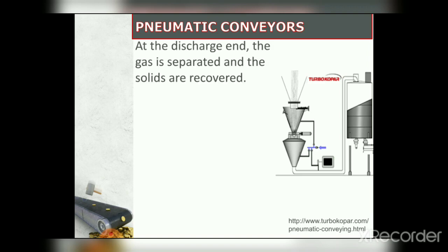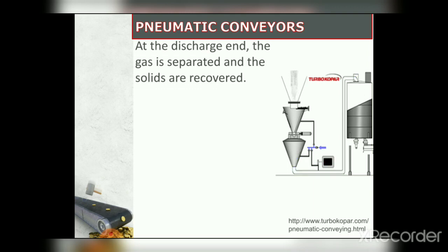At the discharge end, the gas is separated and the solids are recovered. The pneumatic conveyor includes fans or cycloidal blowers connected to the conveying system. An air slide consists of a chute with a porous base through which air is passed. The path of material travel may range from a few meters to several hundred meters. The feed is connected to the air slide through a rotary feeder, and the other end of the pipeline is connected to a cyclone separator.